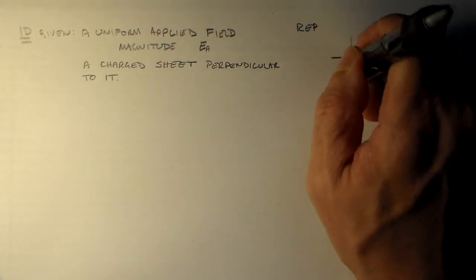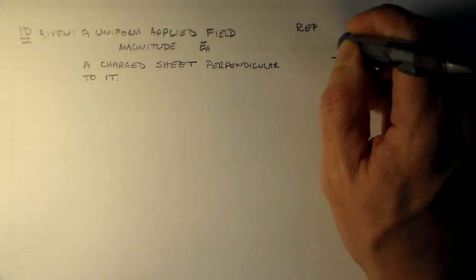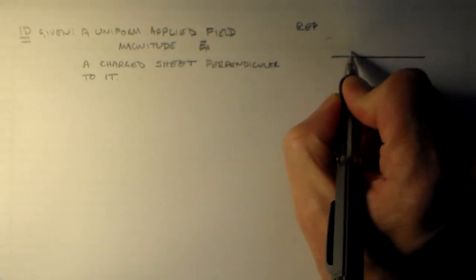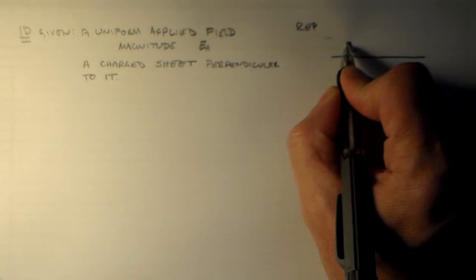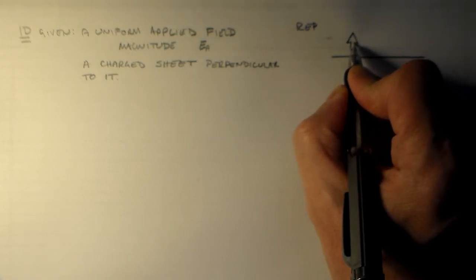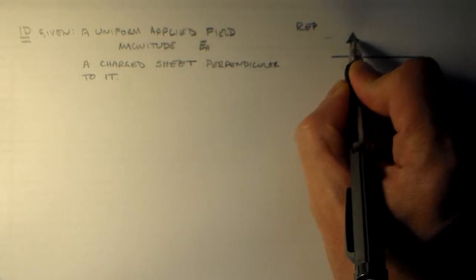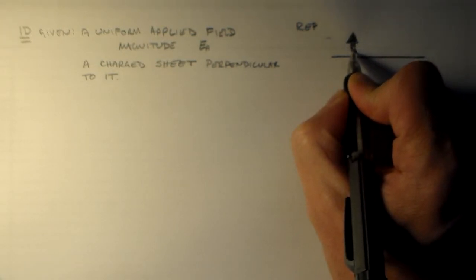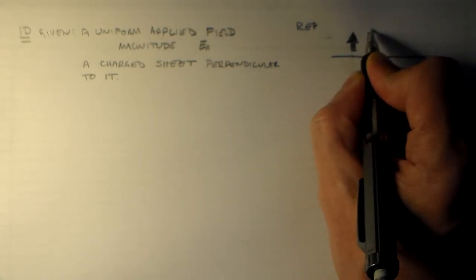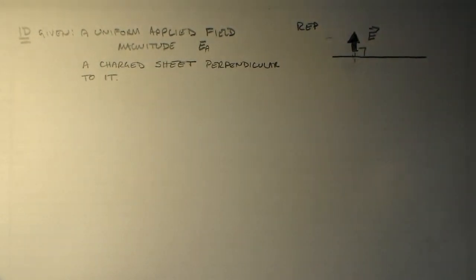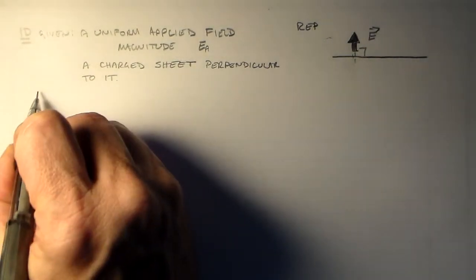Okay, so we won't draw field lines because that will be premature. That will show something that I don't want to show. So we've got a uniform applied field E, right? That's perpendicular.